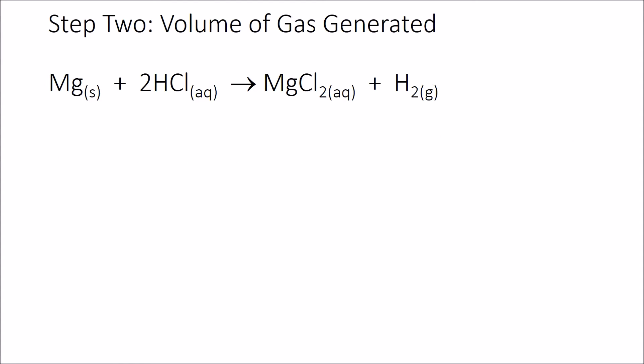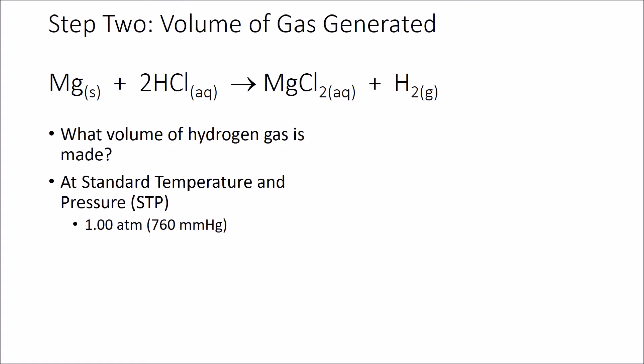So what kind of volume does that represent? If we're going to make some, let's figure out how much. At standard temperature and pressure, which is one atmosphere, or 760 millimeters mercury, and zero degrees Celsius, which is the same as 273 Kelvin, one mole of any gas occupies 22.414 liters of space. That's a conversion factor we can work with.